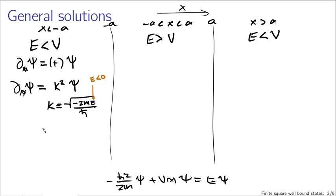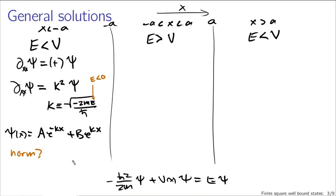The general solutions to equations of this type give psi(x) = A e^{-kx} + B e^{kx}. For x large and negative, if we're going to have something normalizable, we need the wave function to go to zero, which means A must equal zero — since e^{-kx} blows up for large negative x. So the solution in this left region is psi(x) = B e^{kx}.